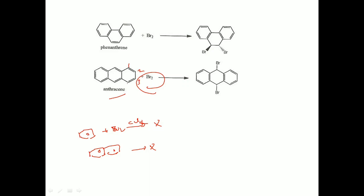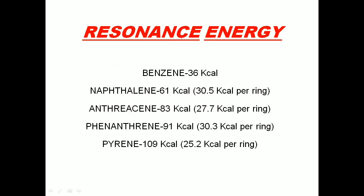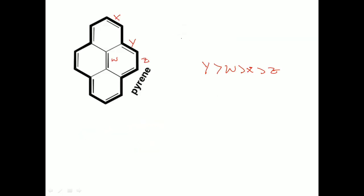The bromine adds at the 9 and 10 positions of anthracene, forming 9,10-dibromoanthracene. Phenanthrene can also decolorize bromine solution, because a specific bond has more double bond character giving it complete alkene properties, so addition takes place. Similarly, pyrene can also decolorize bromine solution — it reacts with bromine in CCl4 and decolorization takes place, with addition occurring at the middle bond.